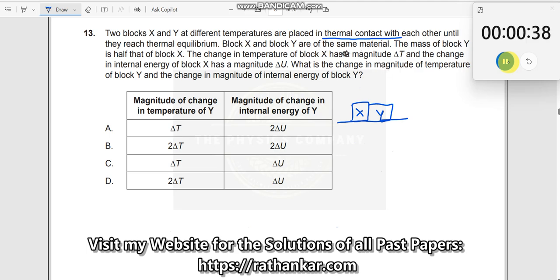Block X and Y are made of the same material. CX is equal to CY. What is C? Specific heat. The specific heat is the same for both.